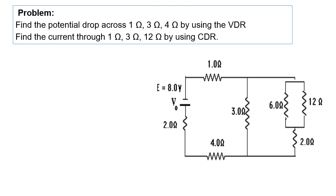The problem is to find the potential drop across 1 ohm, 3 ohm, and 4 ohm by using the VDR, and to find the current through 1 ohm, 3 ohm, and 12 ohm by using the CDR. In this circuit the potential drop of the battery is 8 volts and we have resistors connected in series and in parallel. Let's give names to the branches: a, b, c, d,